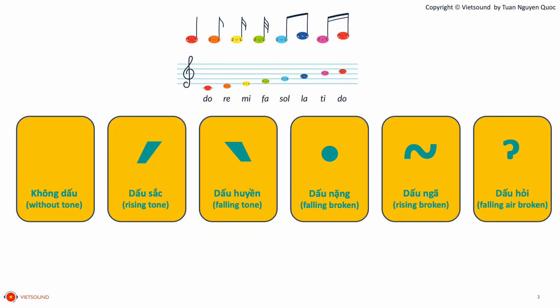You can notice that when someone speaks Vietnamese, they sound like a song. Why is that? Because in Vietnamese we have six tones.